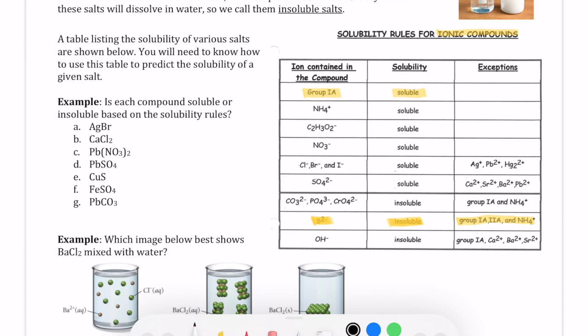So here's a quick example. NaCl. Well, Na is group 1, so that's always soluble. So this is always going to be soluble. If you have MgS, well, according to this rule, S is insoluble, except if the S is combined with one of these guys, group 1A, group 2A, and NH4. Well, MG is group 2A, so it would be soluble.